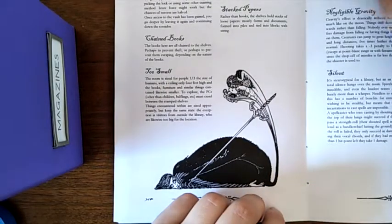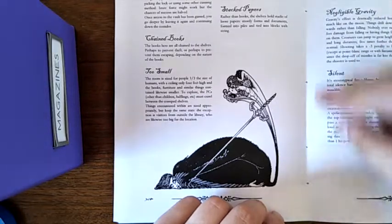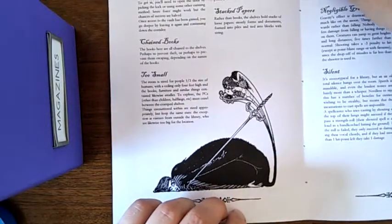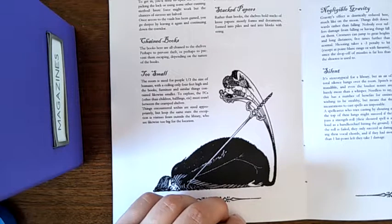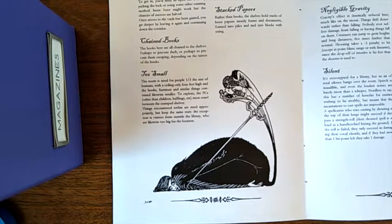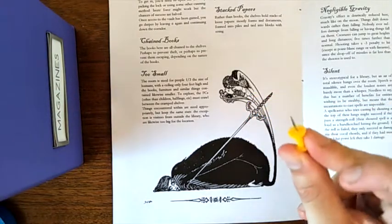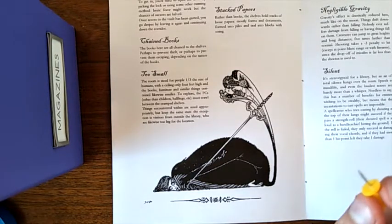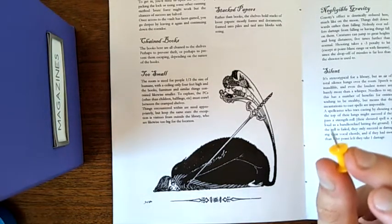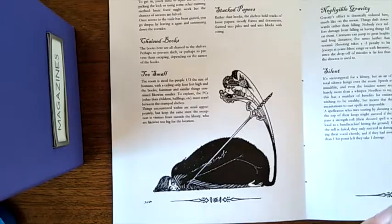Now, the best thing to use to make these holes through the paper is something called a binders awl, A-W-L. It's just a really sharp spike that you use to make holes in paper. Unfortunately, I lost my binders awl, so I'm going to have to use the cheaper alternative, which is a push pin. You could also maybe use a kitchen skewer or a really big needle if you have one.